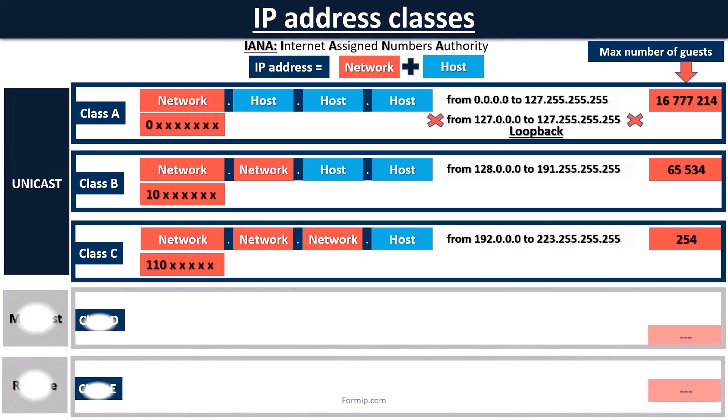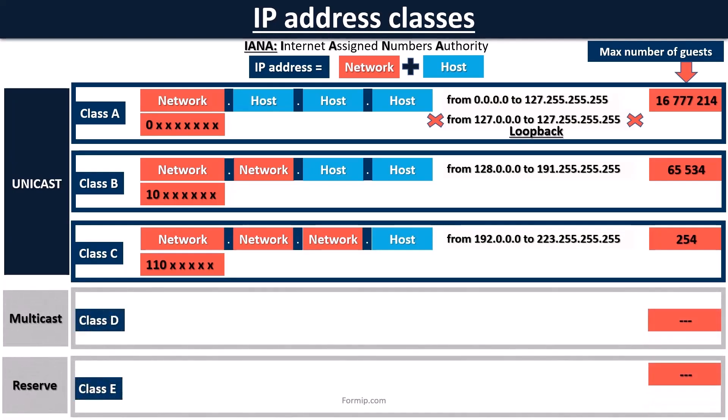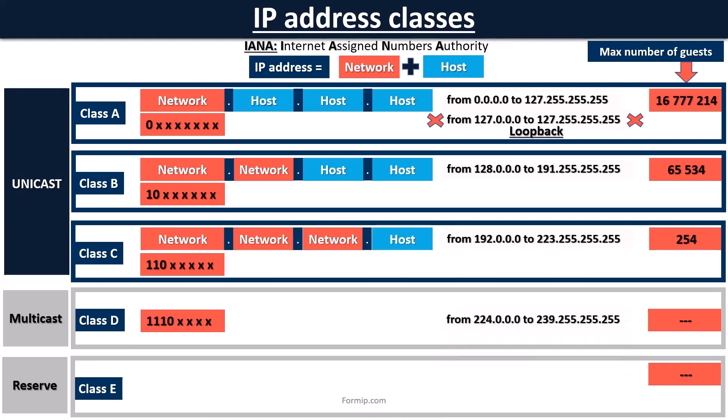There are also two other classes which are not intended for IP hosts. Class D is dedicated to multicast applications, for example streaming. It must begin with the binary 1110 and therefore goes from 224 to 239. Class E is reserved by IANA as an experimental address block. It starts with 1111 and goes from 240 to 255. Class D and E IP addresses are special cases and are never assigned to hosts.